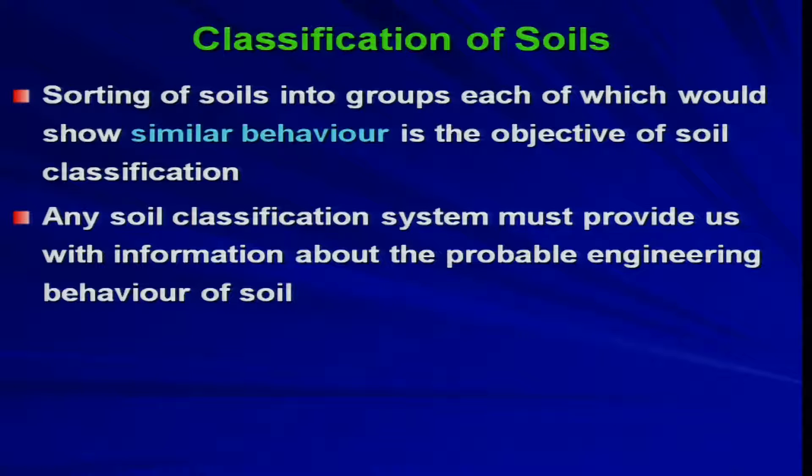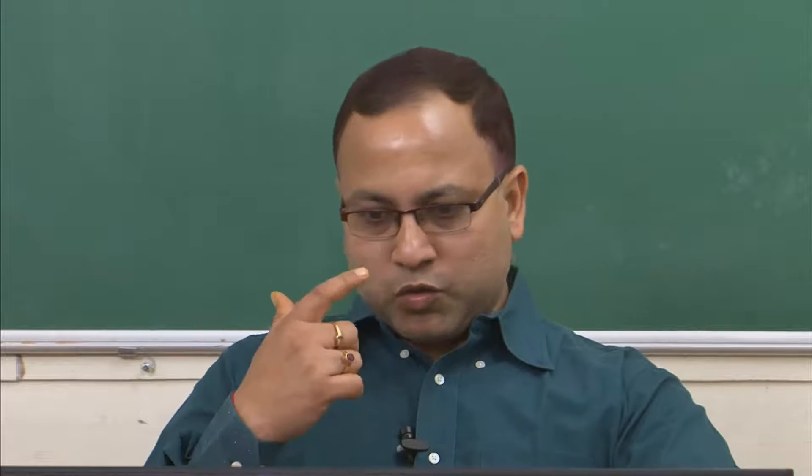Any soil classification system must provide us with information about the probable engineering behavior of soil. There are several classification systems available in the world, and any of them should provide information about the probable engineering behavior — meaning whether the soil has plasticity, organic characteristics, cohesionless nature, fine-grained or coarse-grained texture, or a sticky kind of nature. Those properties will be obtained from the soil classification system.